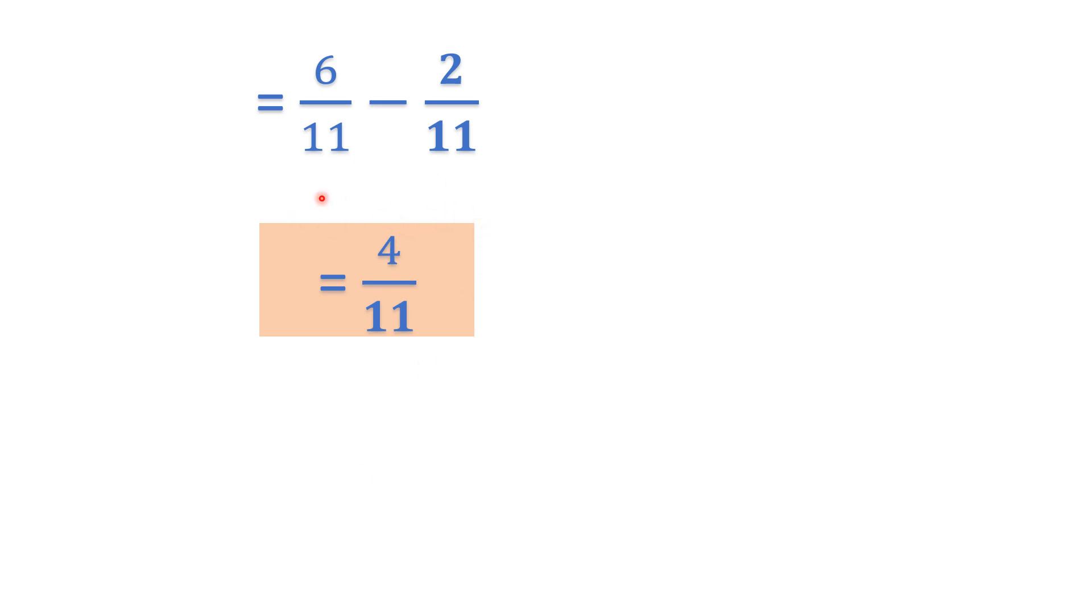So in the next step the 11 will be the denominator and we will just do 6 minus 2. I have not written the step in between, so 6 minus 2 will become 4. So 4 by 11 is our answer. Remember this we can do only when the fraction is a like fraction.